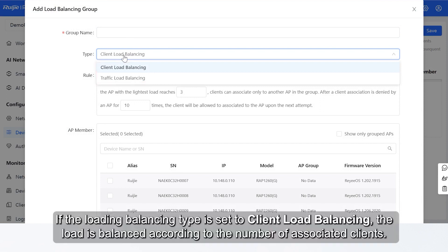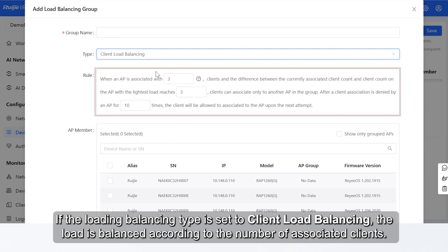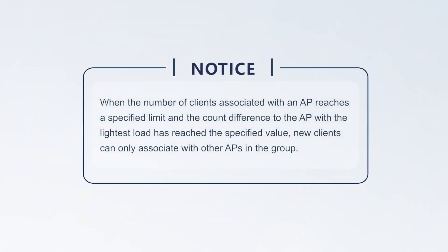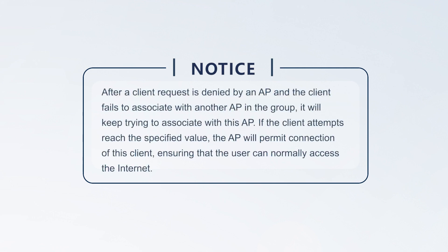If the Load Balancing Type is set to Client Load Balancing, the load is balanced according to the number of associated clients. When the number of clients associated with an AP reaches a specified limit and the count difference to the AP with the lightest load has reached the specified value, new clients can only associate with other APs in the group. After a client request is denied by an AP and the client fails to associate with another AP in the group, it will keep trying to associate with this AP. If the client attempts reach the specified value, the AP will permit connection of this client, ensuring that the user can normally access the Internet.